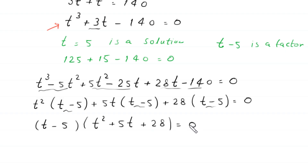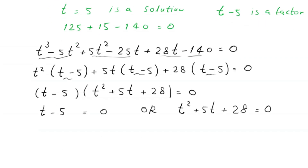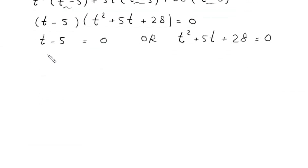Factoring out t minus 5 gives t minus 5 times t squared plus 5t plus 28 equals 0. From this, either t minus 5 equals 0, giving t equals 5, or t squared plus 5t plus 28 equals 0.